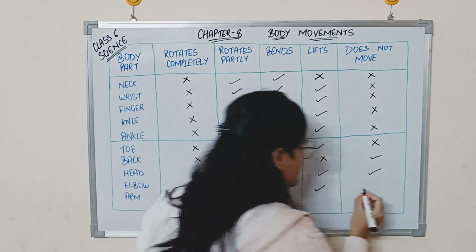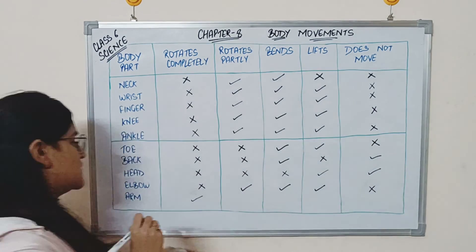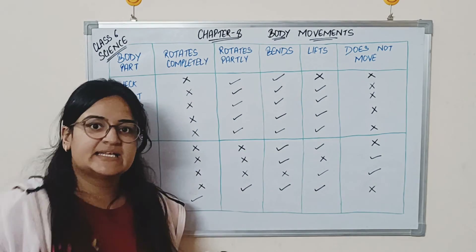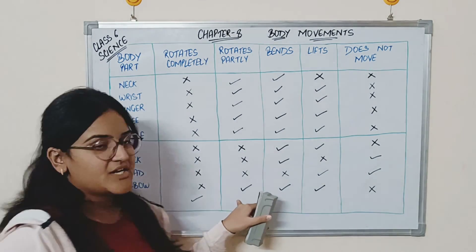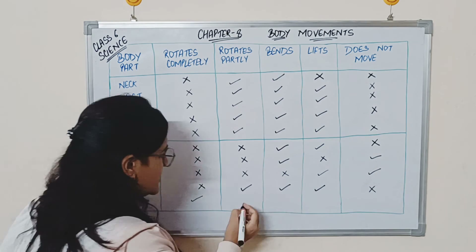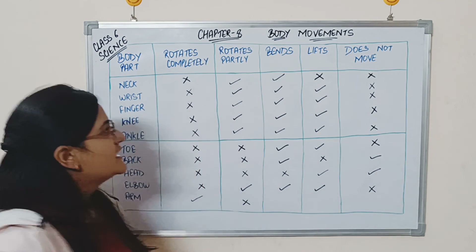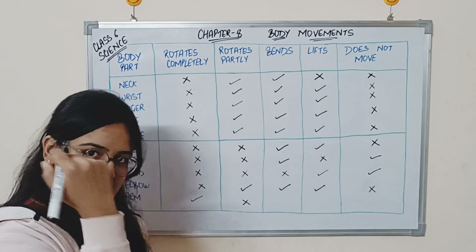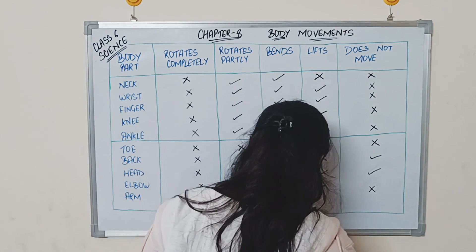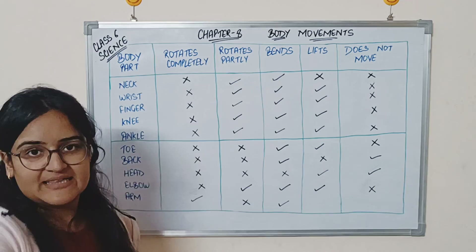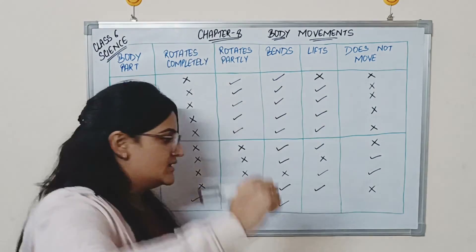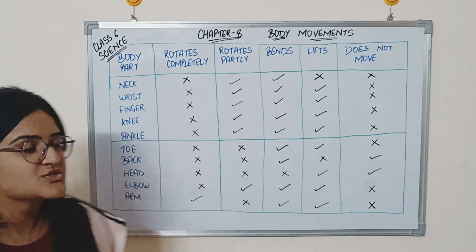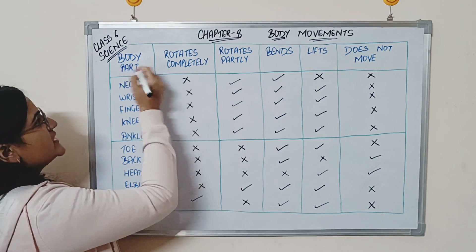Last one is the arm. The arm can rotate completely. It can also rotate partially. You can bend it, and you can lift your arm. Okay, so this completes Table 8.2.